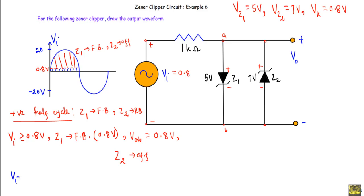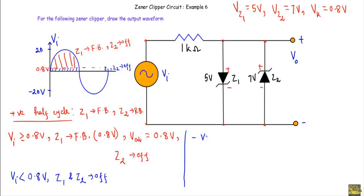Now consider the portion of the applied voltage when Vi is less than 0.8 volt. In this case, none of the diodes will be in forward bias, so both Z1 and Z2 will be in the off state.